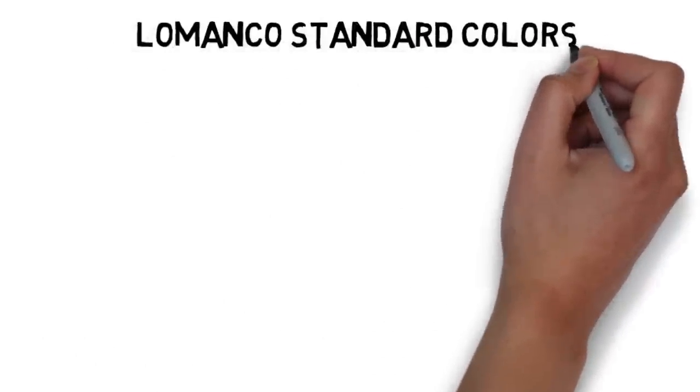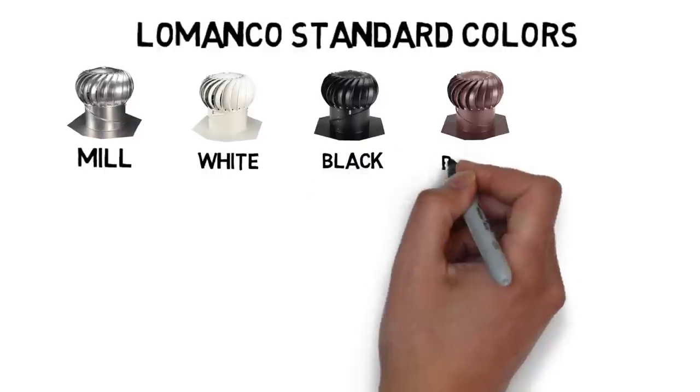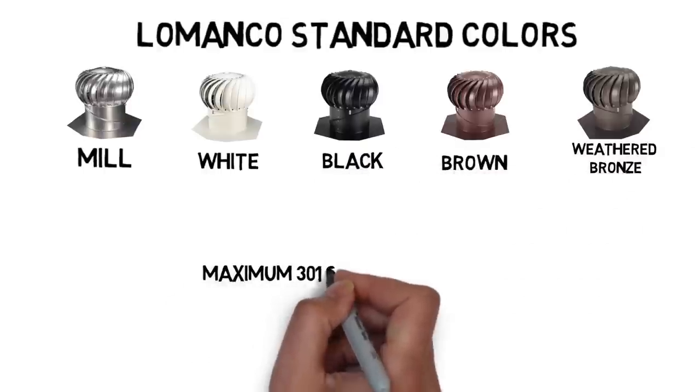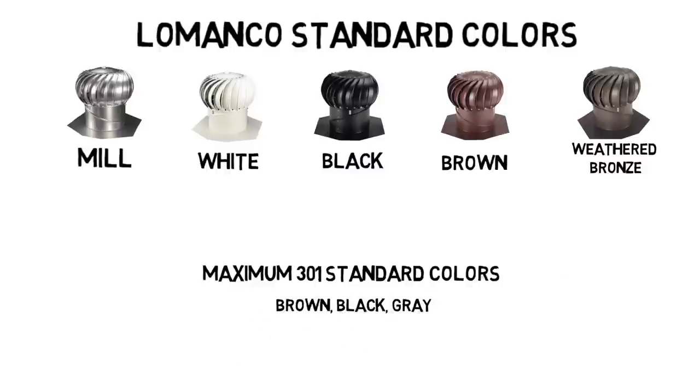The Whorlybird is available in standard colors of mill, white, black, brown and weathered bronze. You can get theirs in all their standard colors of brown, black, gray and that's it.